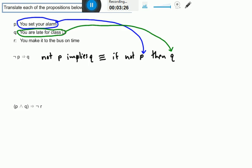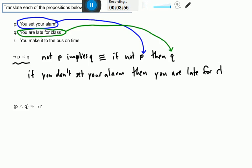Now negating P, if P means you set your alarm, negating that would mean you don't set your alarm. So the way we would translate this proposition not P implies Q would be to say if you don't set your alarm, that's the not P part, then Q, you are late for class.